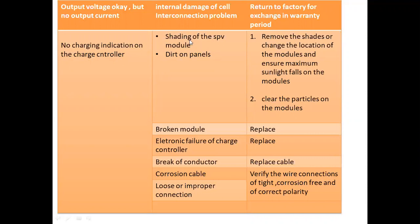First, check for shading of the PV module. If the charging indication on the charge controller is fixed, that means the sensor is working. If we have a connection with the module, we will have power generation automatically.